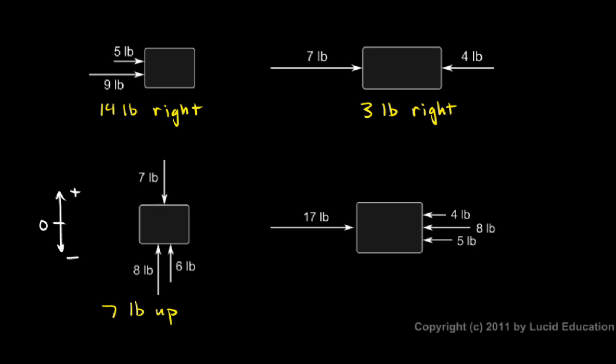And then we add up all 3, so we add 8 and 6 and negative 7, and that adds up to a total of 7 in the positive direction, or 7 pounds up.